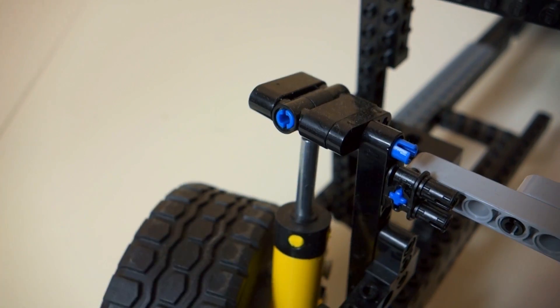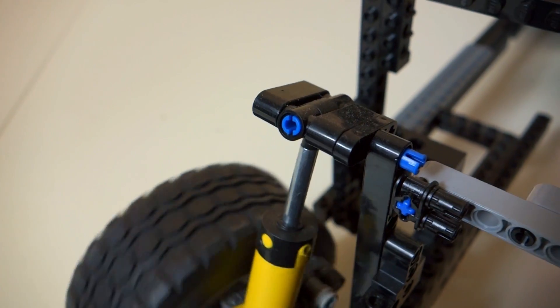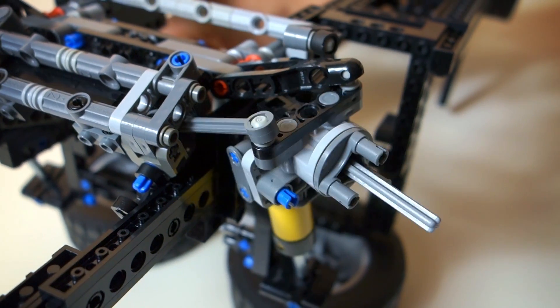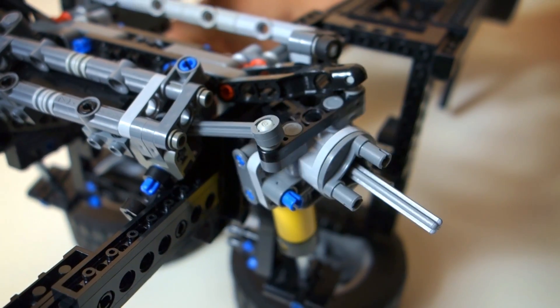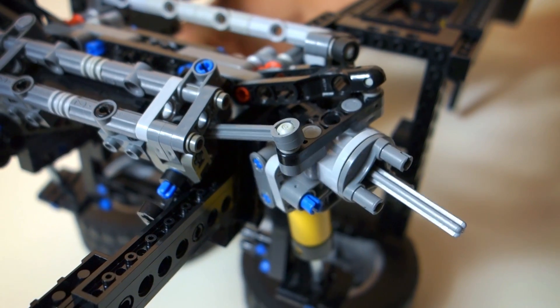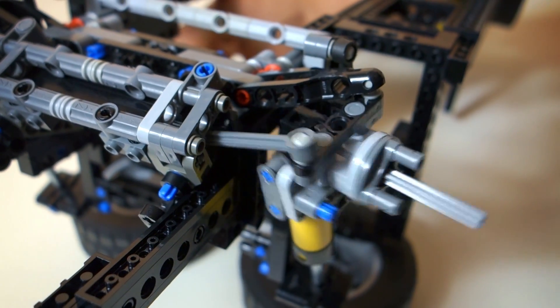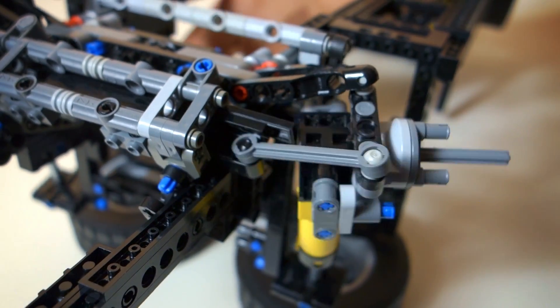I have also made a better mounting point on the top of the shock absorber. The bottom is made with an improvised version of the new 1x5 lift arm that can be found in the new F1 car. But since I don't have those yet, I made my own for now.